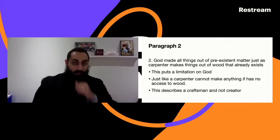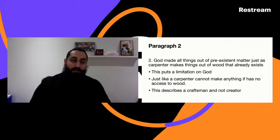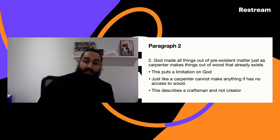The second idea about creation is some people say God made things out of pre-existent matter, just as a carpenter makes things out of wood that already exists. This would put limitation on God, just like a carpenter cannot make anything if he has no access to it. This describes a craftsman and not a creator.